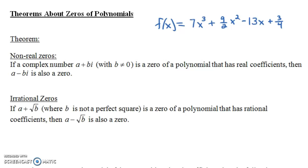Notice this polynomial: 7x cubed plus 9/2 x squared minus 13x plus 3/4. All the coefficients — if they're not whole numbers, they're at least fractions. We could think of 7 as 7/1, we have 9/2, minus 13/1, and 3/4. All the coefficients are rational numbers. We don't have anything like the square root of 2 or pi as a coefficient — those are irrational numbers. And we also don't have anything like i, such as 3i or 7+4i as a coefficient.